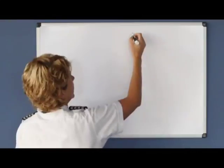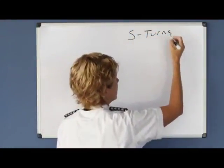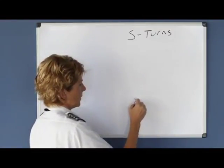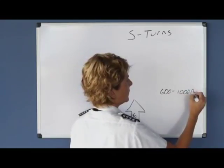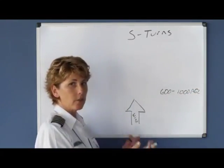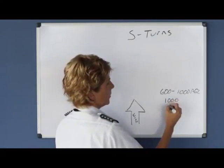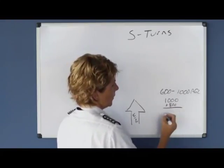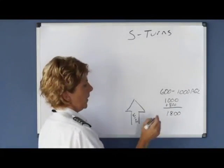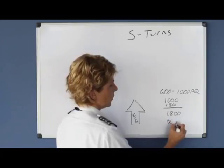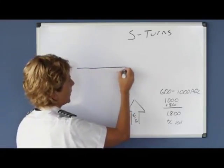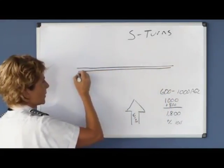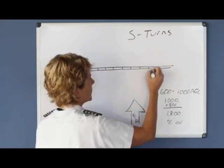The next ground reference maneuver is S-turns. S-turns also need to be performed by entering with a tailwind, and the same altitude restriction applies — you must enter between 600 to 1,000 AGL. So if the field elevation is 1,000 feet, adding 800 feet AGL puts us in the proper range, meaning we'd begin the maneuver at 1,800 feet indicated on our altimeter. Then we get plus or minus 100 feet to hold our altitude throughout. For S-turns, we want to find something that can be used as a good reference line that is perpendicular to the wind — maybe a nice long, straight railroad track.